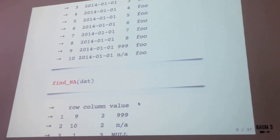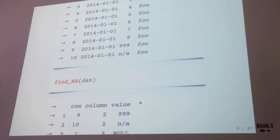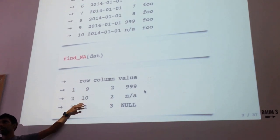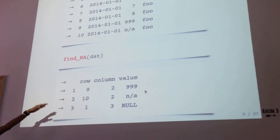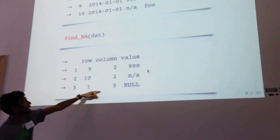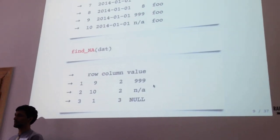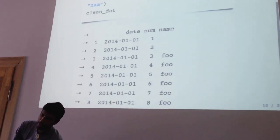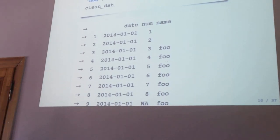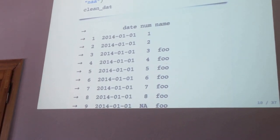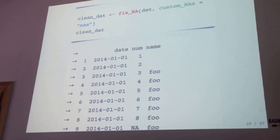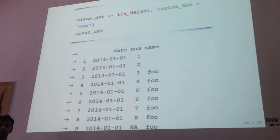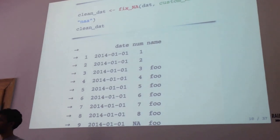This is one possible expectation: you can just say, find poorly formatted NAs in this data set. The output gives you an index of the rows and columns where it's detected these NAs. You can see it hasn't picked up one NA because it's not a standard variation. But you can go through and fix this by just saying 'fix the NAs,' and you can add a regular expression or other types that you might expect. This is just one trivial use case for what you might do.